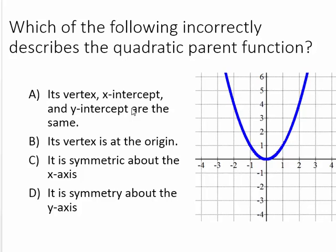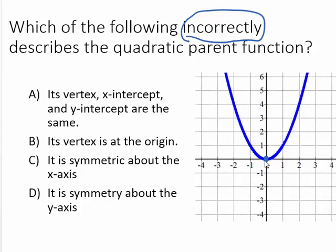Which of the following incorrectly — notice that's a key word, incorrectly — describes the quadratic parent function? Answer choice A says its vertex, x-intercept, and y-intercept are all the same. Well, its vertex is at the point zero, zero. That's also where it hits the x-axis, so its vertex and x-intercept are the same. And that is also where it crosses the y-axis. So the vertex, x-intercept, and y-intercept are all the same, which means A is a correct description.